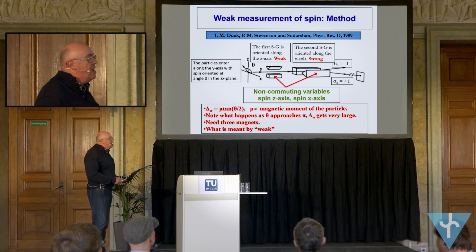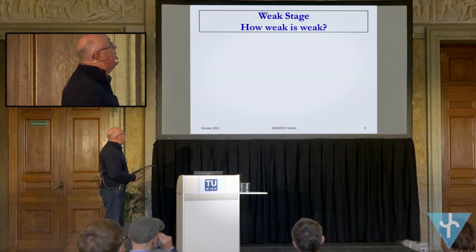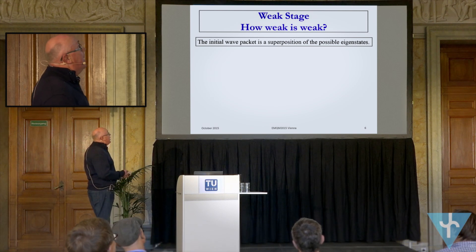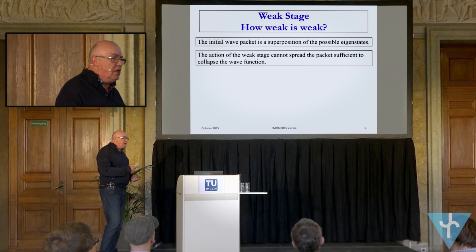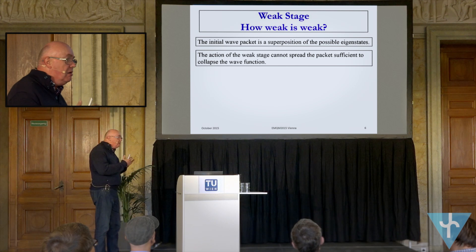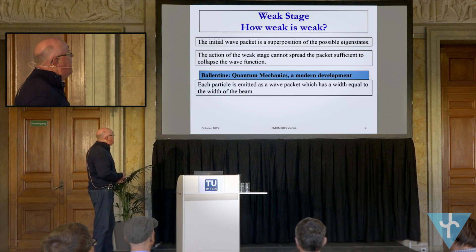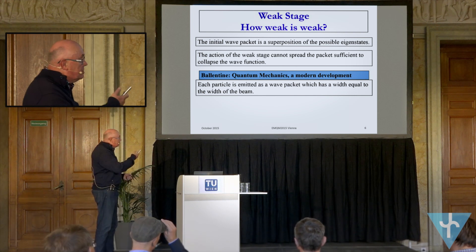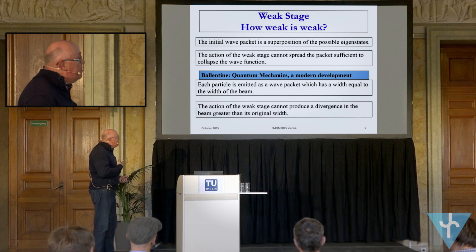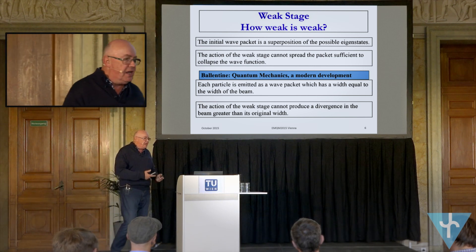The next thing: what is meant by 'weak'? I asked this of the conference two years ago when I first considered doing this. After much discussion I came to this conclusion: the initial wave packet is a superposition of possible eigenstates — fairly standard stuff. The action of the weak stage cannot be so strong that it actually performs a strong measurement and separates the states out. It's somehow got to act on the wave function but retain the integrity of the superposition. Going to Ballantyne, he made the point that each particle in a beam is emitted as a wave packet whose width equals the width of the beam. So the action of the weak stage basically cannot produce a divergence in the beam greater than the original width of the beam — that's how I've defined the strength of the weak stage.